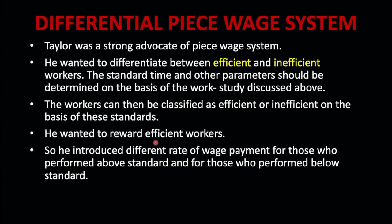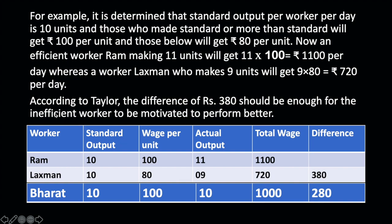Taylor wanted to reward efficient workers. So he introduced a different rate of wage payment — for those who perform at or above standard, a higher rate, and for those who perform below the standard, a lower rate. For example, the standard output is 10 units per day. Those who meet or exceed the standard will get ₹100 per unit, and those below that will get only ₹80 per unit.